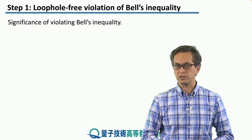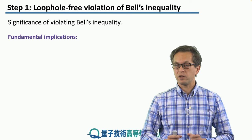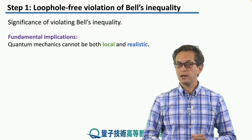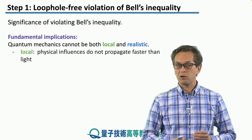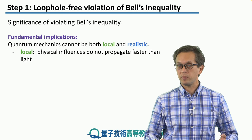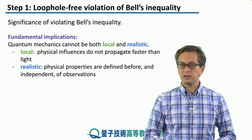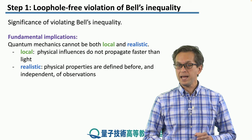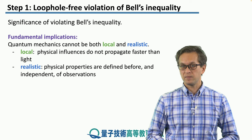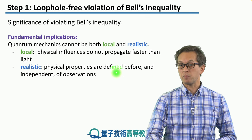What's the significance of this? Why do we care? There are two answers. One: it has very fundamental implications. It says that quantum mechanics cannot be both local and realistic. Local means that physical influences do not propagate faster than light, which is quite natural and expected from special relativity. Realistic says that physical properties are defined before and independent of the observations used to observe physical systems. If we observe a violation of Bell inequality, it says that one of these assumptions must be dropped.